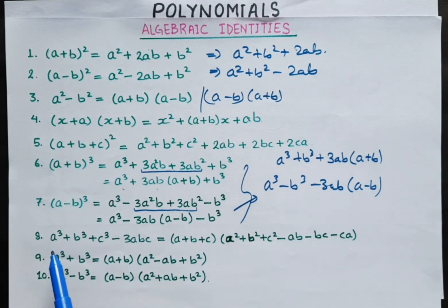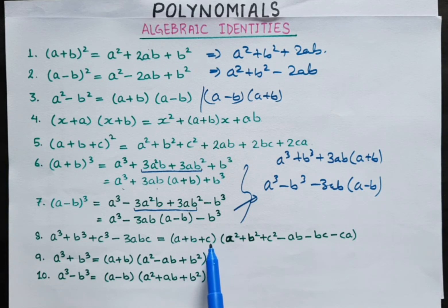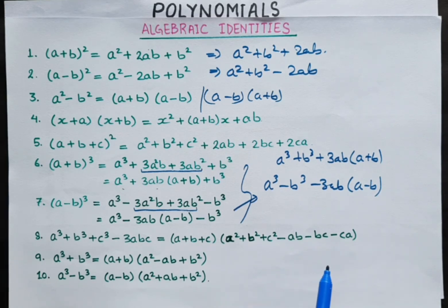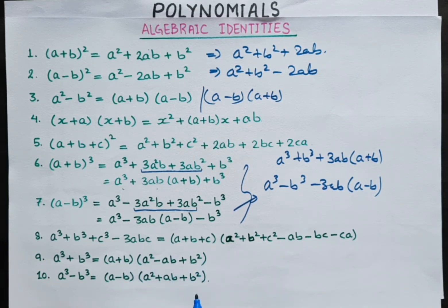Identity number 8: a cubed plus b cubed plus c cubed minus 3abc is equal to (a + b + c) in one bracket, and in another bracket, a squared plus b squared plus c squared minus ab minus bc minus ca. And identity number 9: a cubed plus b cubed is equal to (a + b) in one bracket, and (a squared minus ab plus b squared) in another bracket.